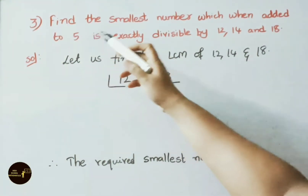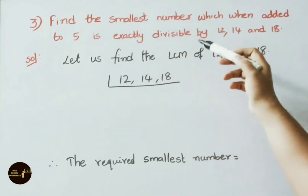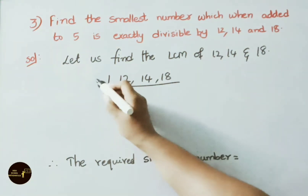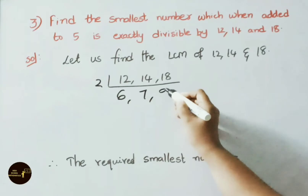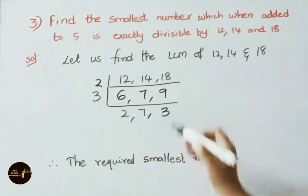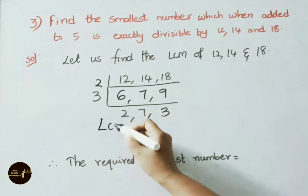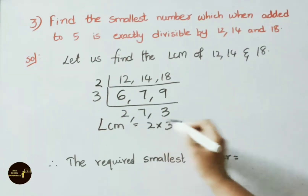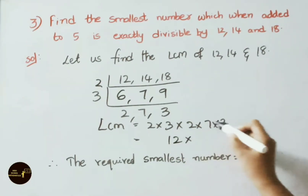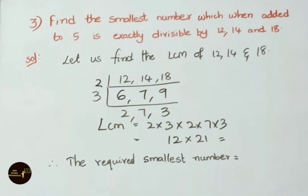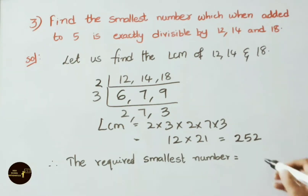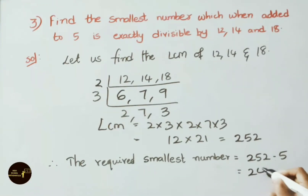Third question: find the smallest number which when added to 5 is exactly divisible by 12, 14 and 18. Find LCM of 12, 14 and 18. Divide by 2: 2 × 6 = 12, 2 × 7 = 14, 2 × 9 = 18. Divide by 3: 3 × 2 = 6, 7 not present, 3 × 3 = 9. LCM = 2 × 3 × 2 × 7 × 3 = 252. Therefore the required smallest number is 252 − 5 = 247.